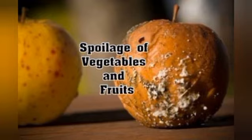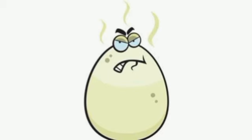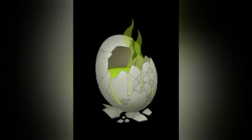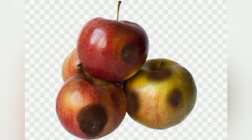The degradation of food quality takes the form of development of bad smells and odour and loss of nutrients. For example, rotten eggs develop a bad smell due to the formation of hydrogen sulfide gas. The next example is decaying of vegetables and fruits due to microbes. These are all examples of spoilage of food and vegetables.